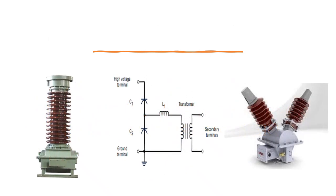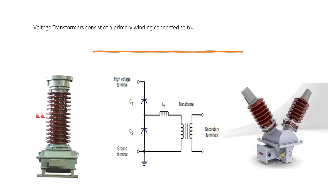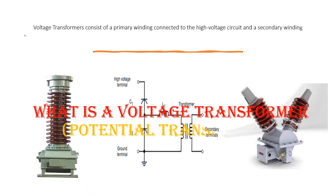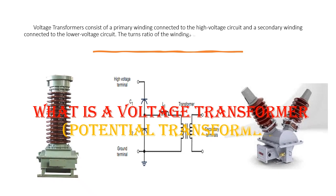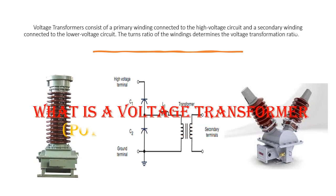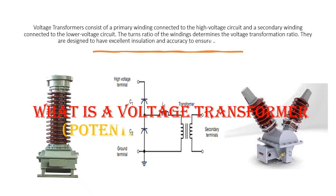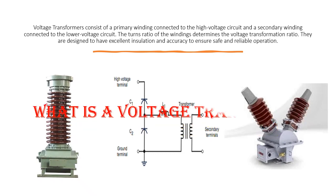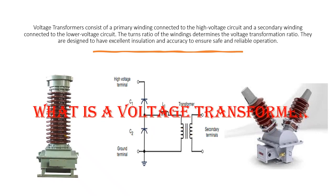Voltage transformers consist of a primary winding connected to the high voltage circuit and a secondary winding connected to the lower voltage circuit. The turns ratio of the windings determines the voltage transformation ratio. They are designed to have excellent insulation and accuracy to ensure safe and reliable operation.